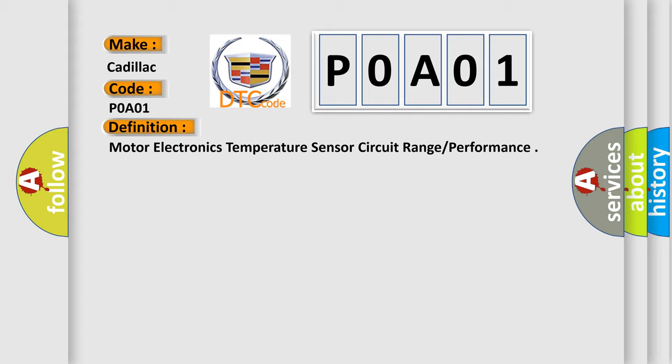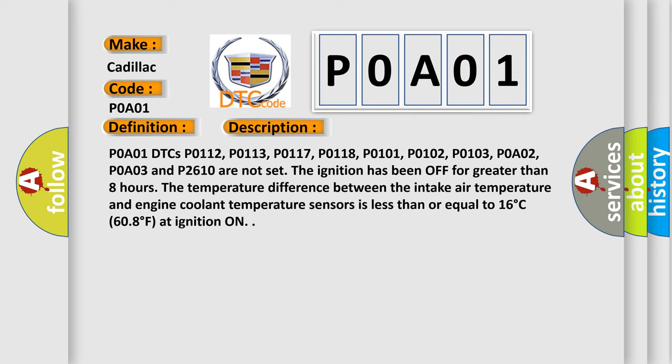And now this is a short description of this DTC code. P0A01 DTCs P0112, P0113, P0117, P0118, P0101, P0102, P0103, P0A02, P0A03 and P2610 are not set. The ignition has been off for greater than eight hours.